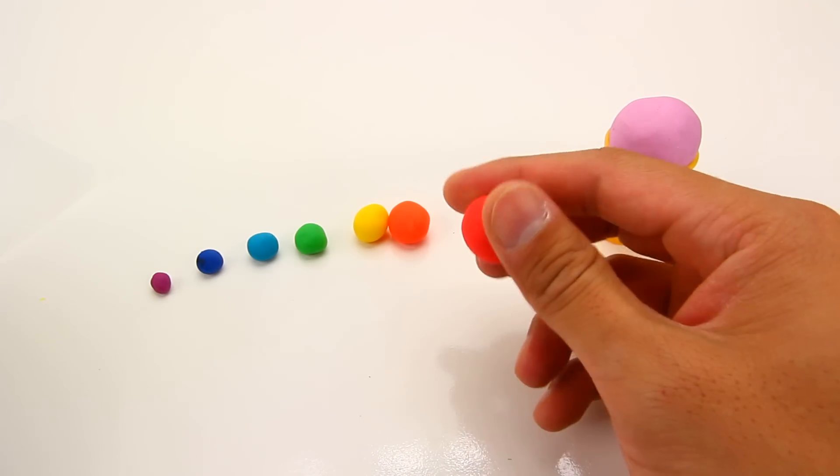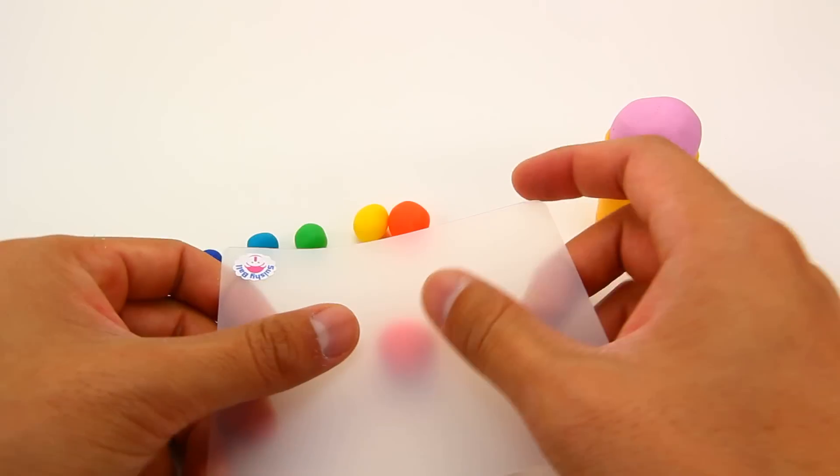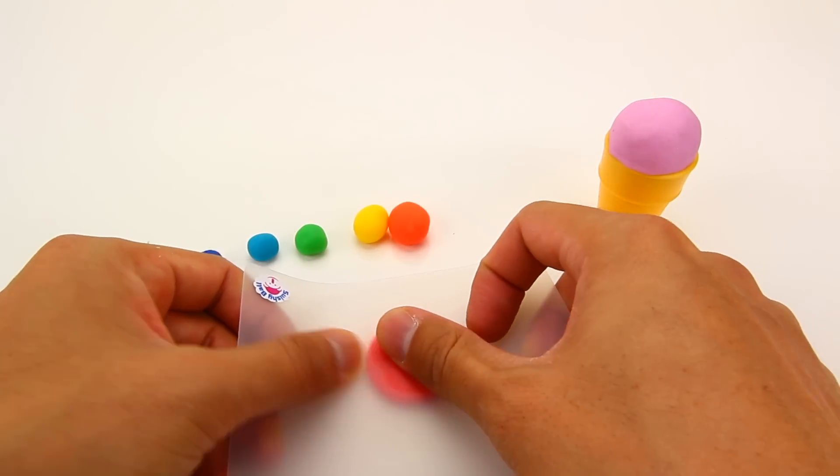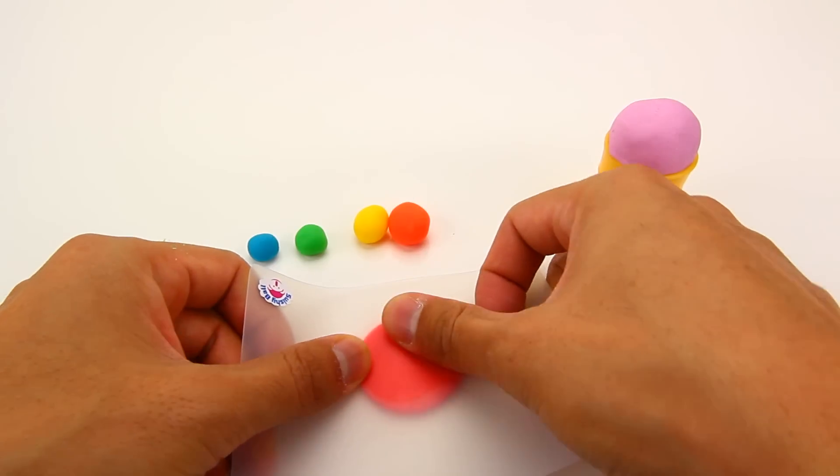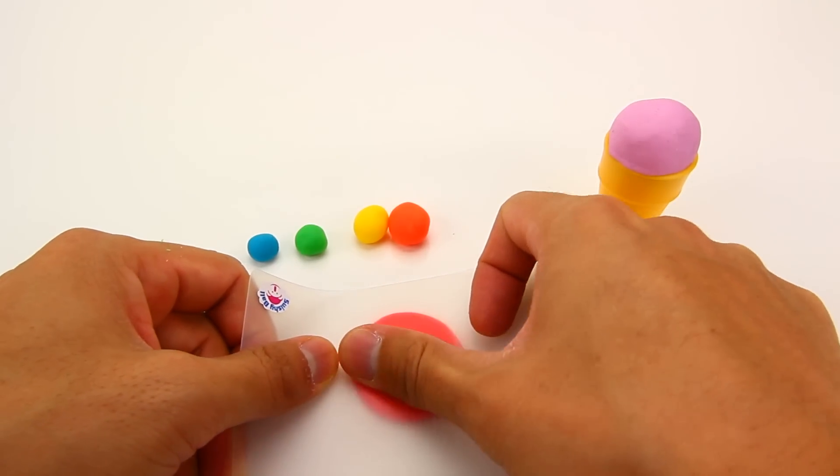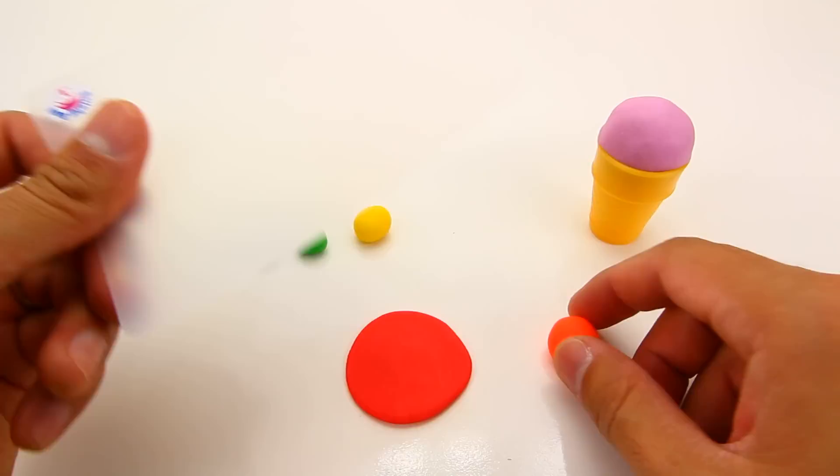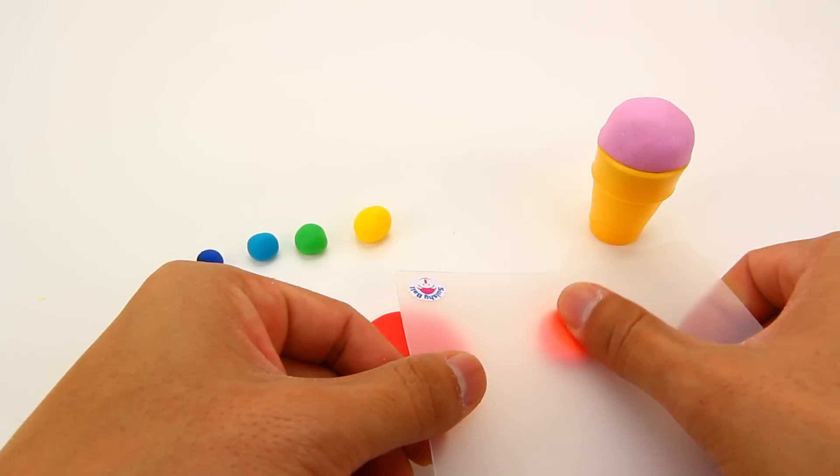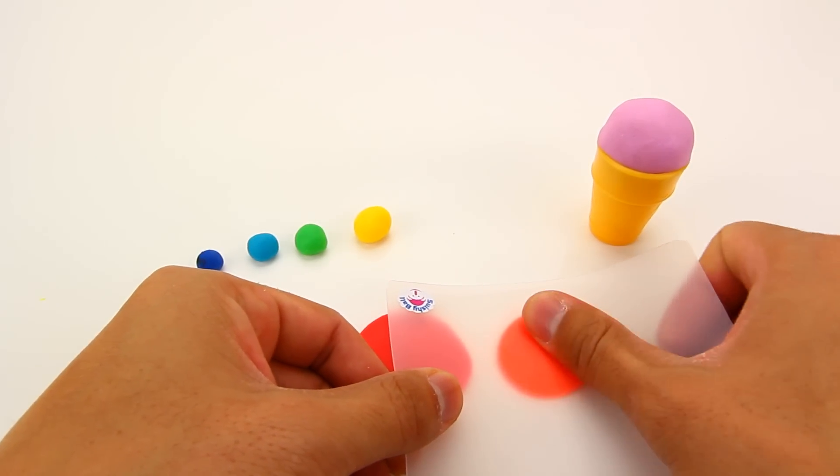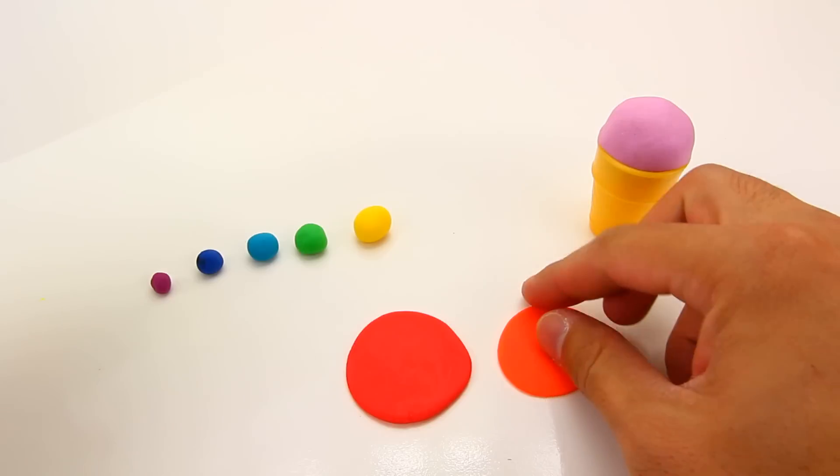And we're going to put the rainbow topping on the ice cream. And to make it, we just start off by making little discs out of the rainbow play-doh. And each disc should be a little smaller than the previous one.